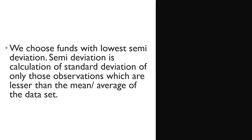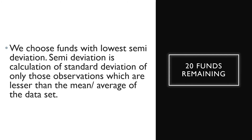Number 17: We choose funds with the lowest semi-deviation. Semi-deviation is a calculation of the standard deviation of only those observations which are lesser than the mean average of the data set. Then, 20 funds remaining.